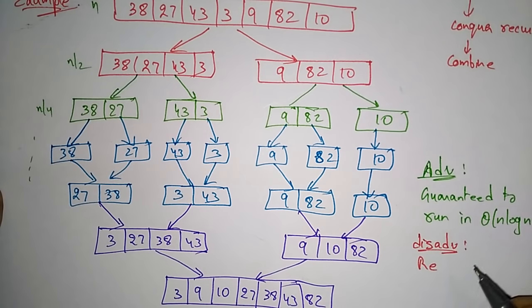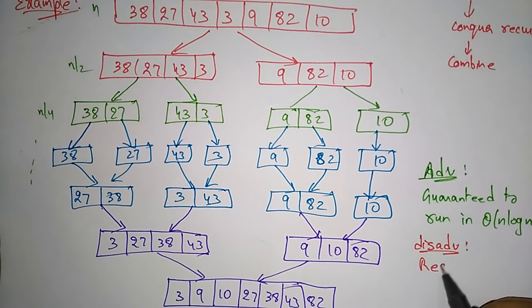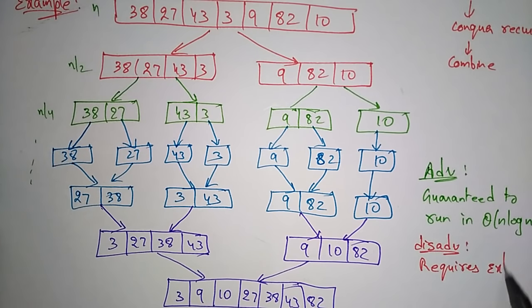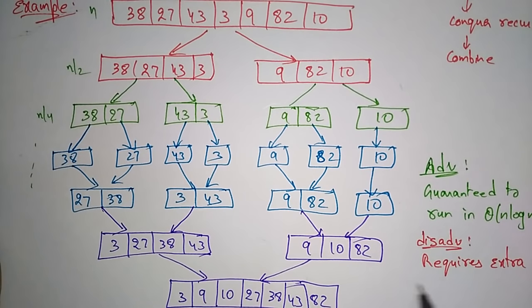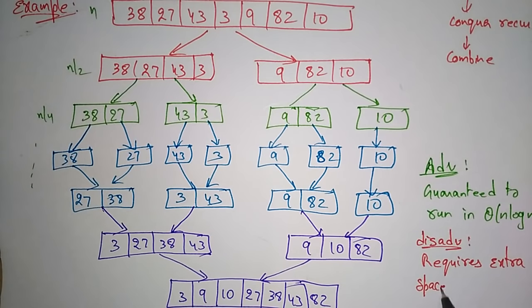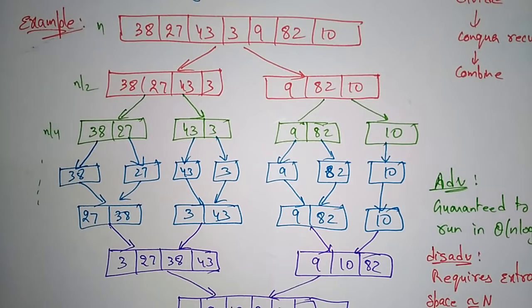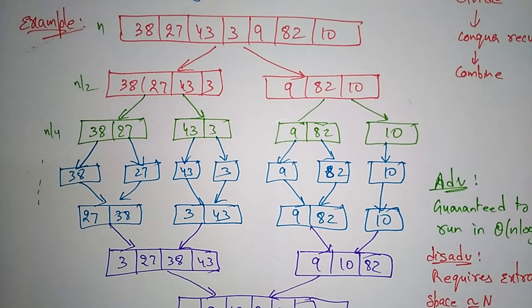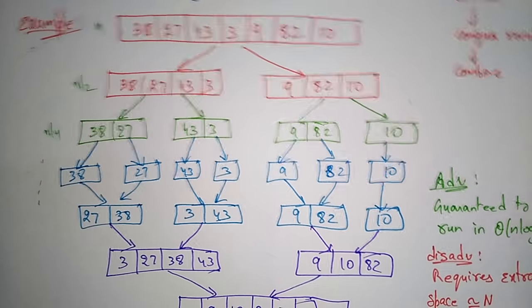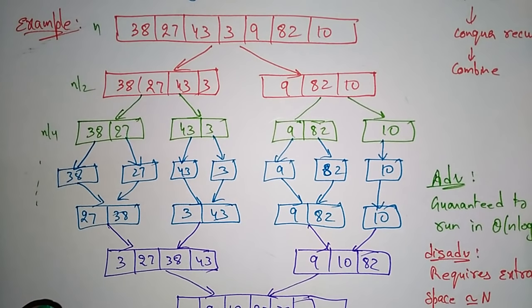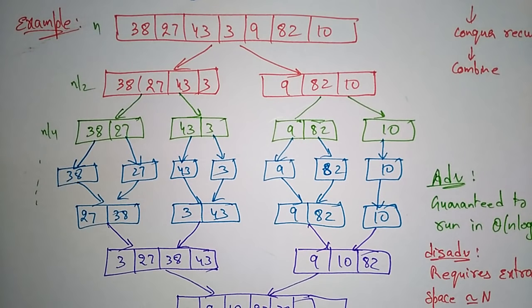The main disadvantage is that it requires extra space — approximately size n. Whatever the size of the array, it requires extra space equal to n. Suppose n is the size of the array; it requires one more n of extra space. So this is about the merge sort. Thank you.